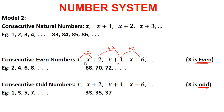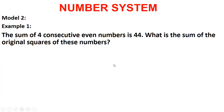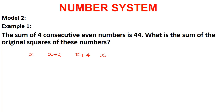Let us take the first example based on the concept of consecutive numbers. The question is: the sum of 4 consecutive even numbers is 44. What is the sum of the squares of these numbers? Since it is talking about even numbers, we take: x, x+2, x+4, x+6. The sum of these 4 numbers equals 44: x + (x+2) + (x+4) + (x+6) = 44.